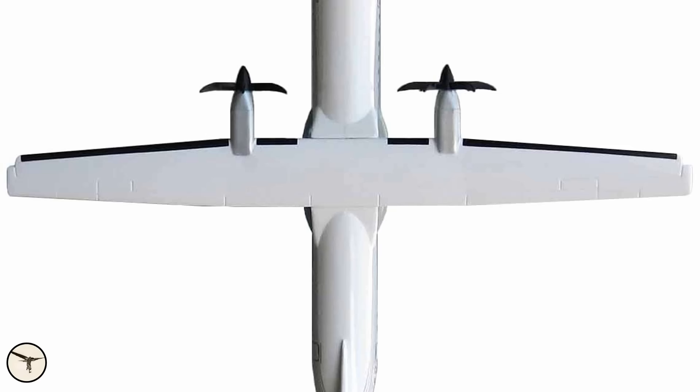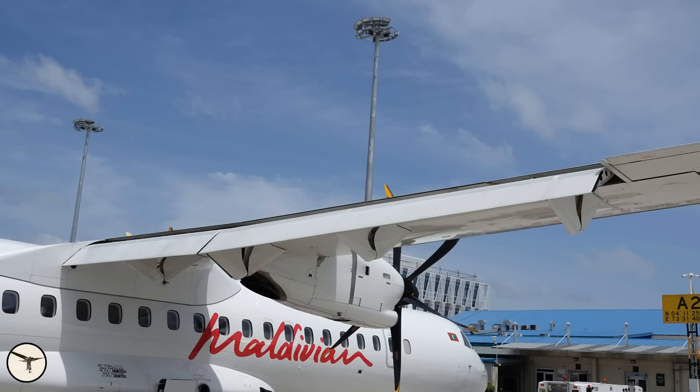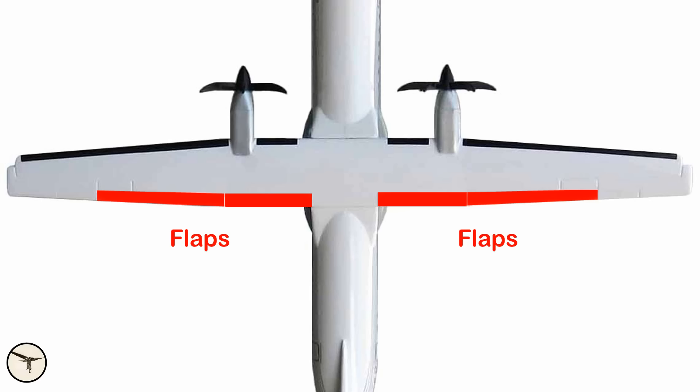The second benefit is the enhanced lift capability. A wing with a high aspect ratio will have more space for flaps, which will both increase the wing area and the lift, and therefore reducing the speed for takeoff and landing. About 70% of the trailing edge of an ATR 72 is dedicated to the flaps.